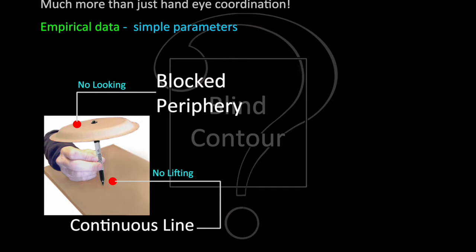It's a technique that involves very simple parameters. Two of the main parameters are no looking at the paper and using a continuous line. A continuous line means there's a long duration of contact with the paper.